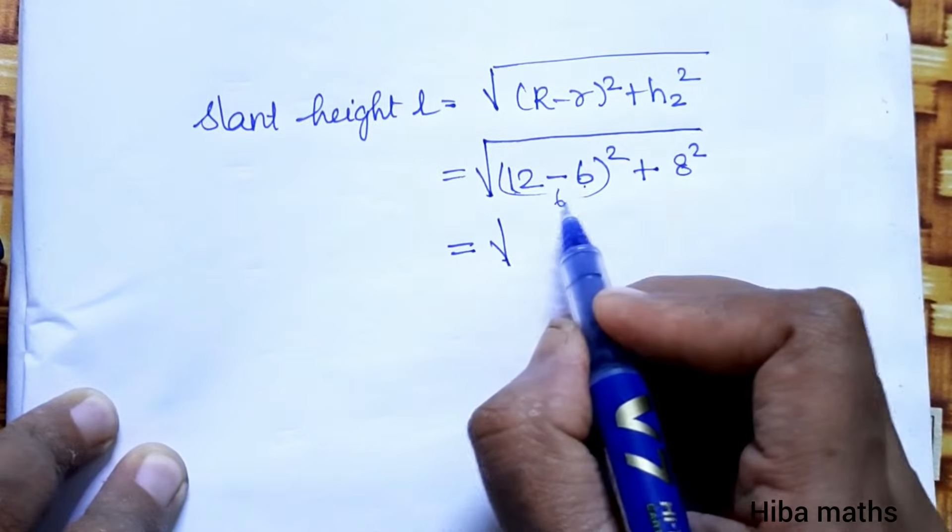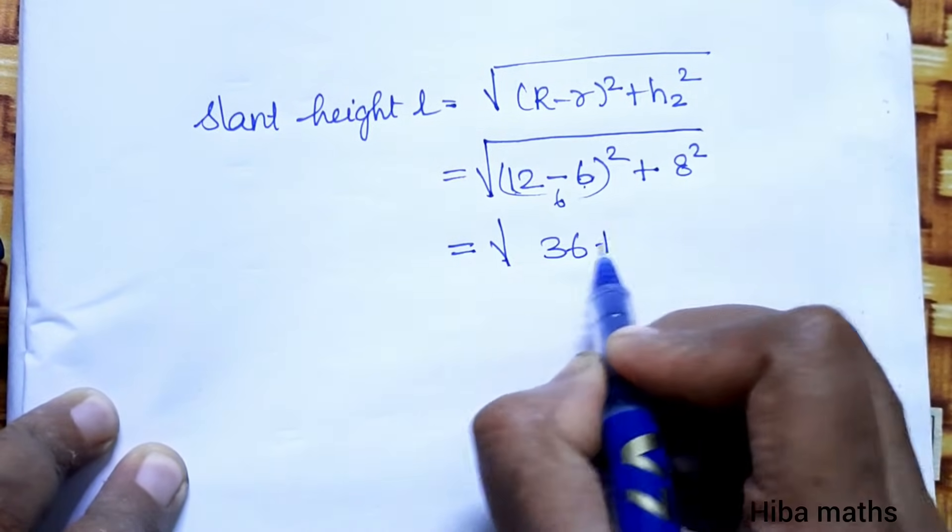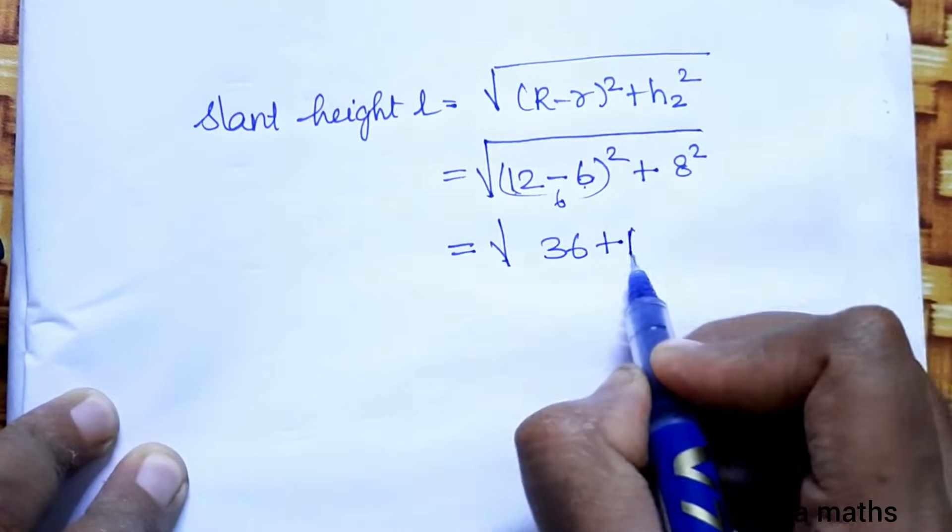Substituting: capital R value 12, small r value 6, squared, plus h value 8 squared. That equals root of (12 minus 6) squared plus 8 squared, equals root of 36 plus 64.